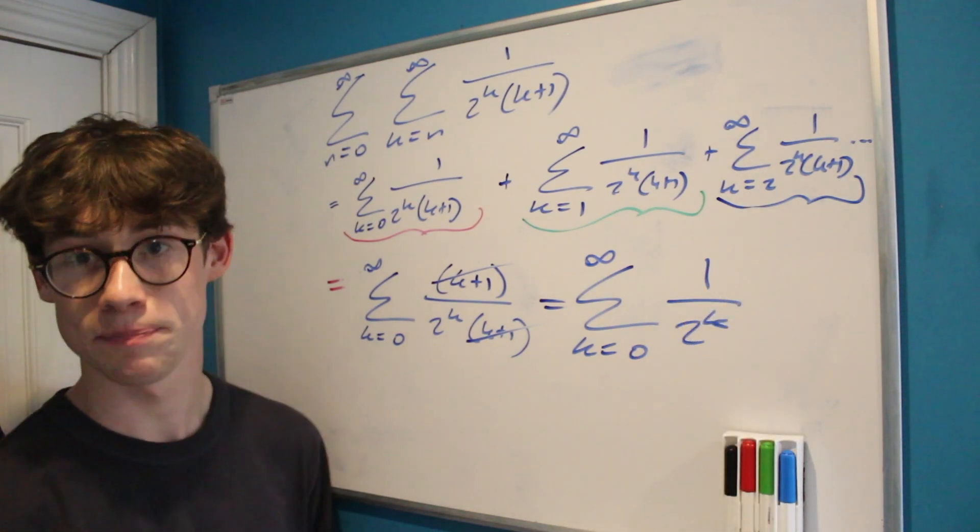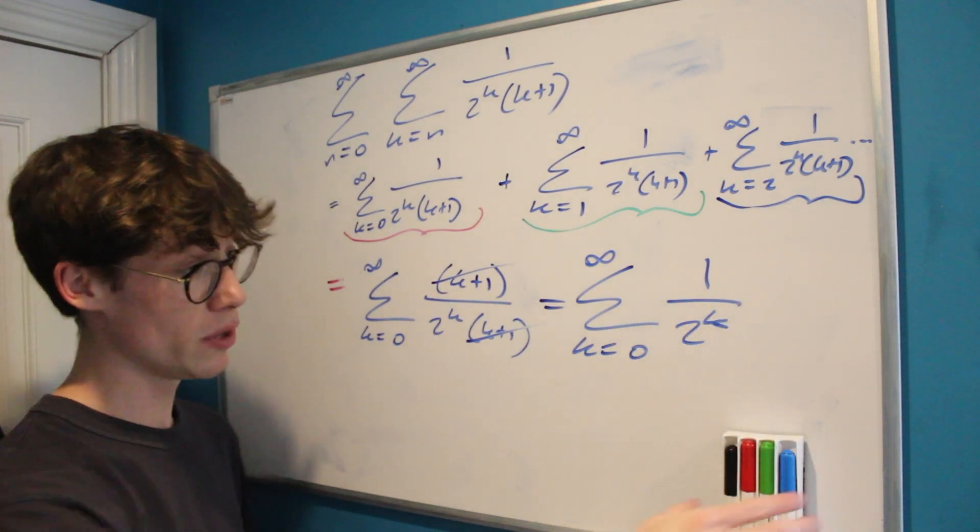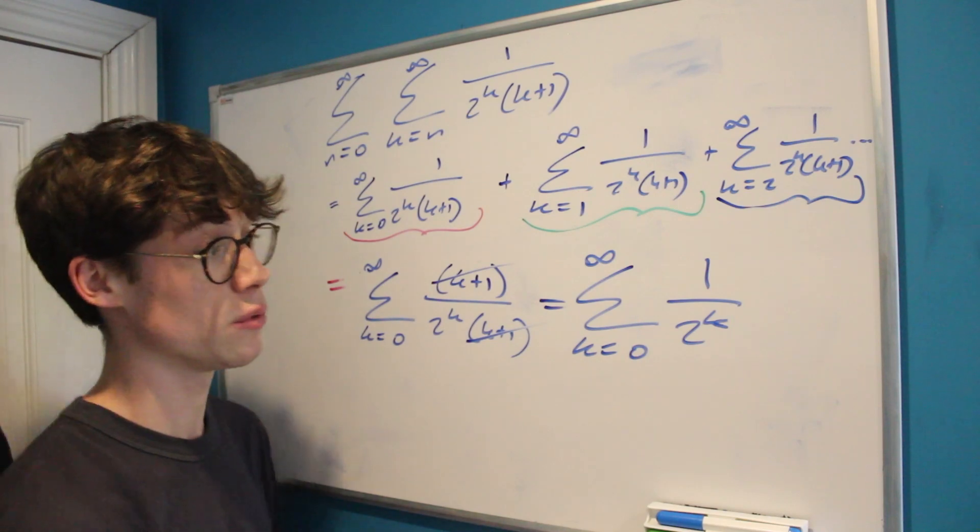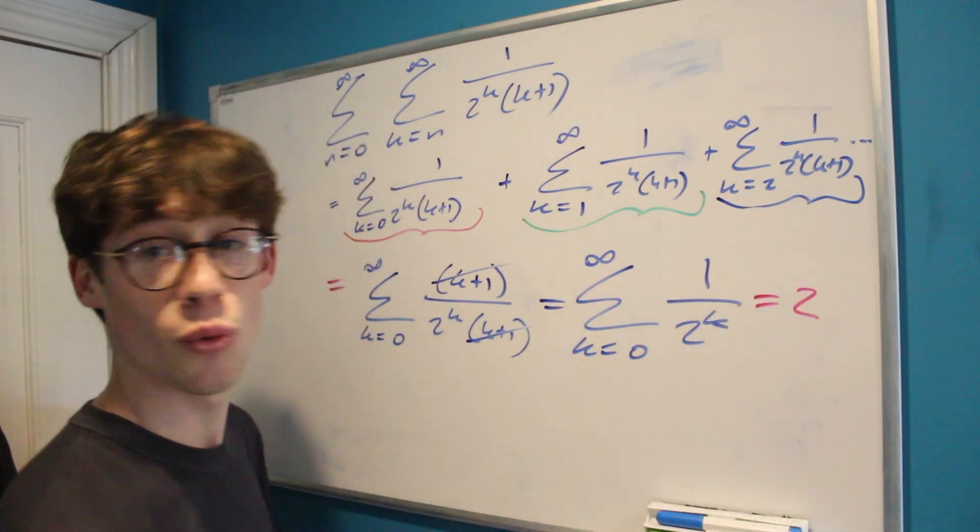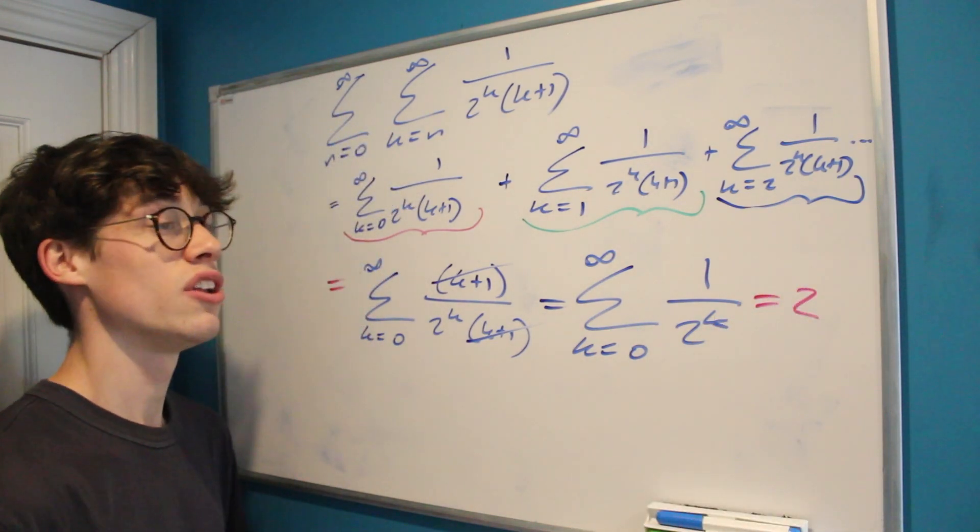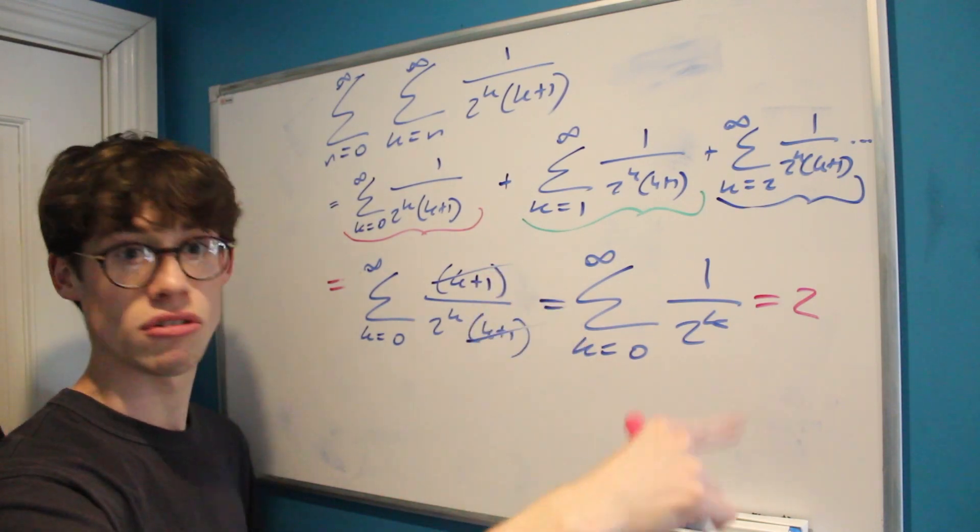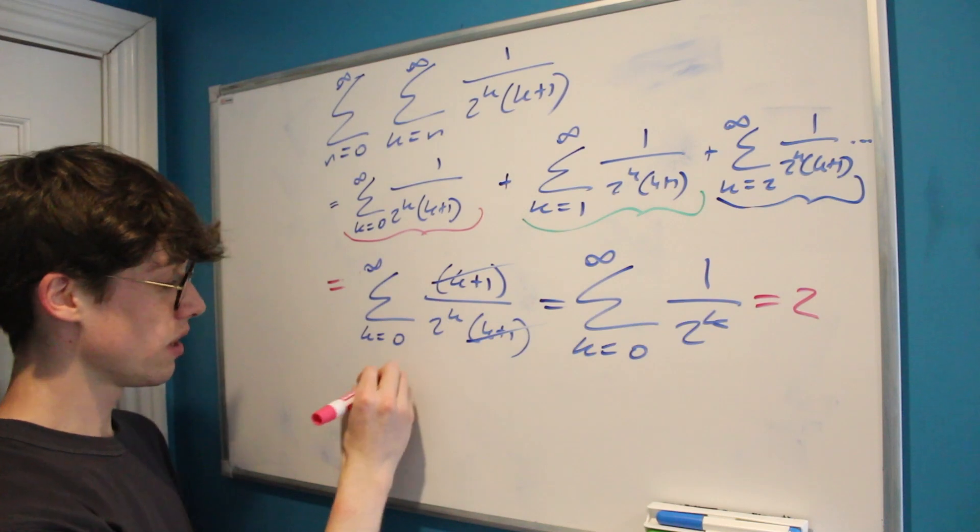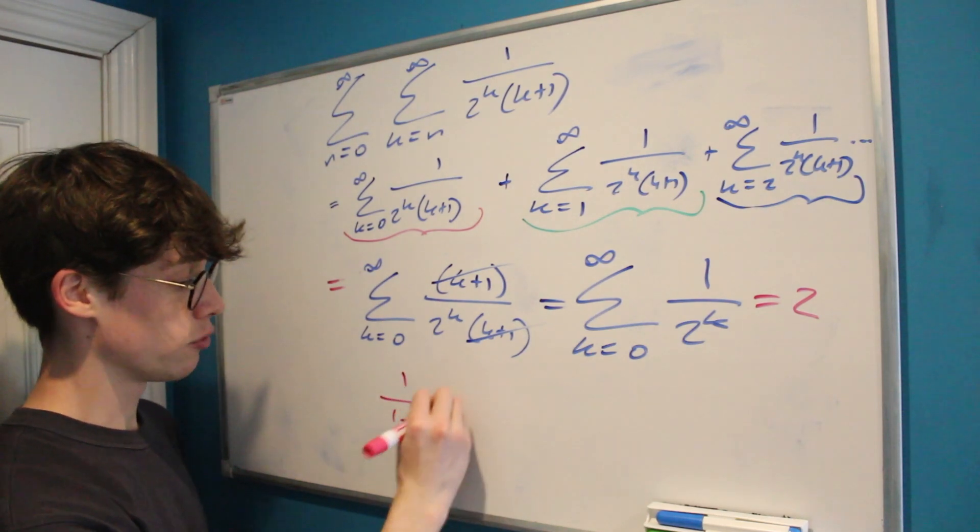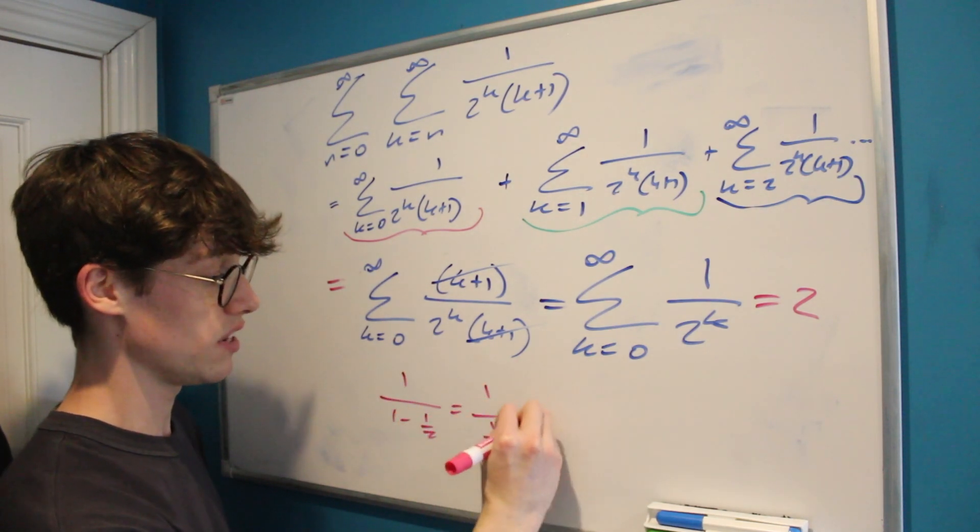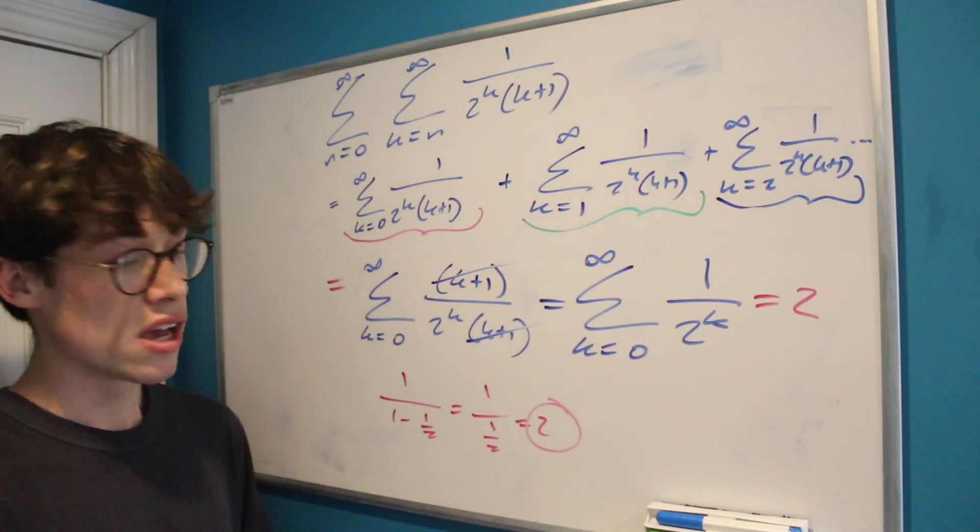There's a few ways we can get to that without just knowing it. First of them is that this is a geometric series with a common ratio of a half and a starting point of 1. And of course we all know that 1 over a half is equal to 2.